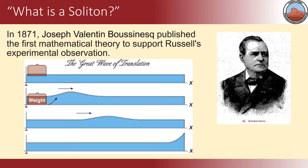Joseph Valentin Boussinesq, in 1871, said 'I have an idea,' and came up with the Boussinesq equations. He employed them to explain how solitons work. Unfortunately, it was about 100 years before we could actually solve the Boussinesq equations with a computer.